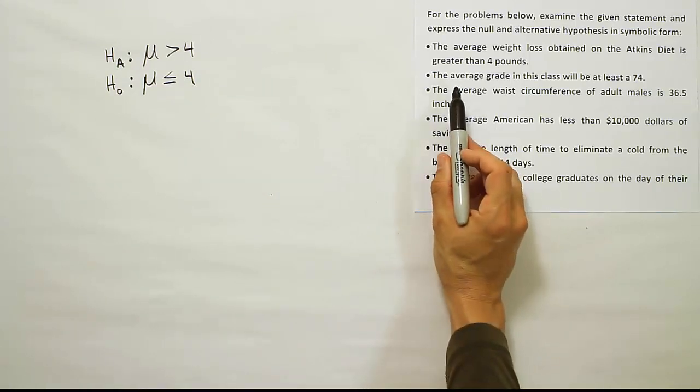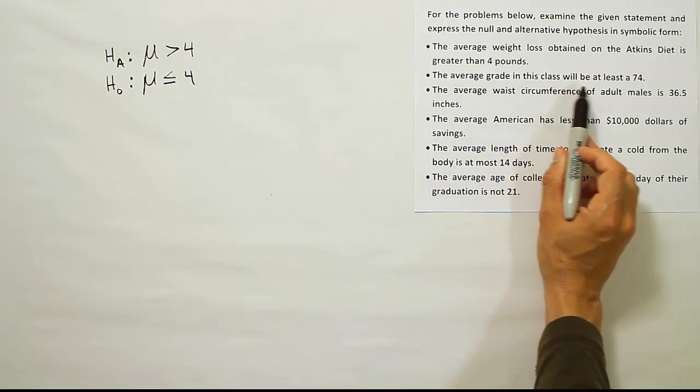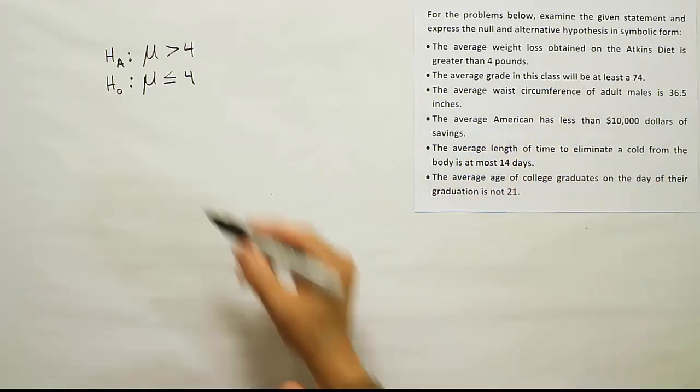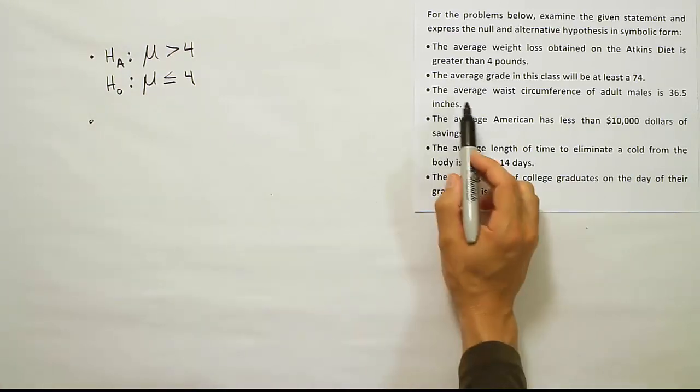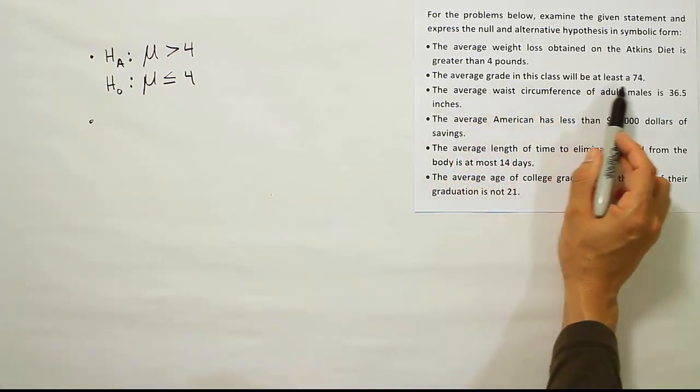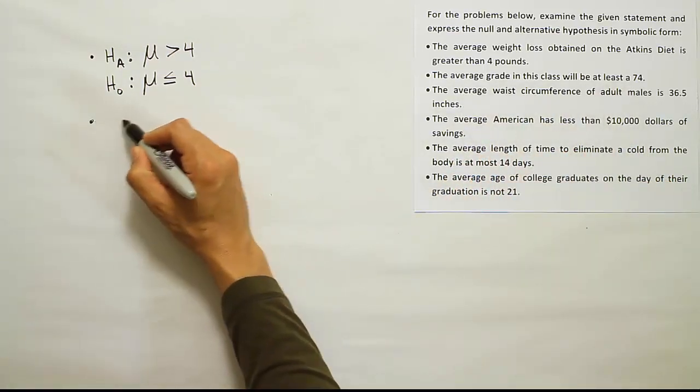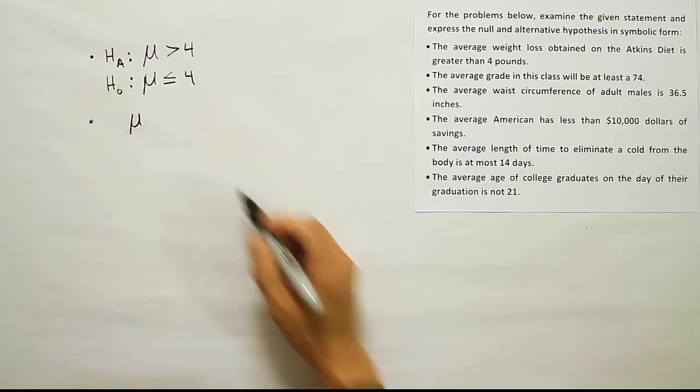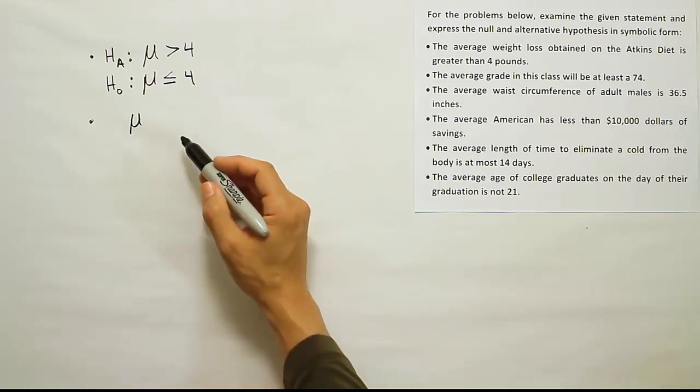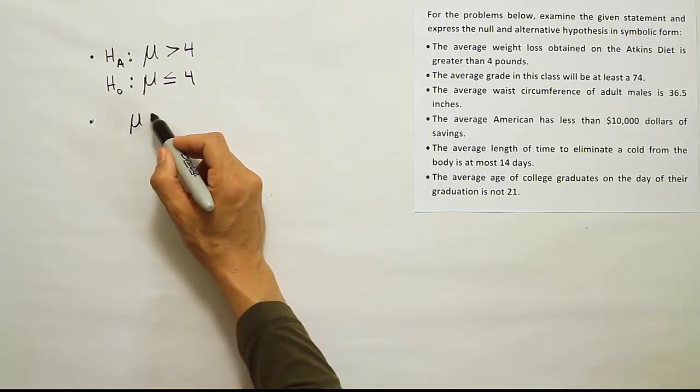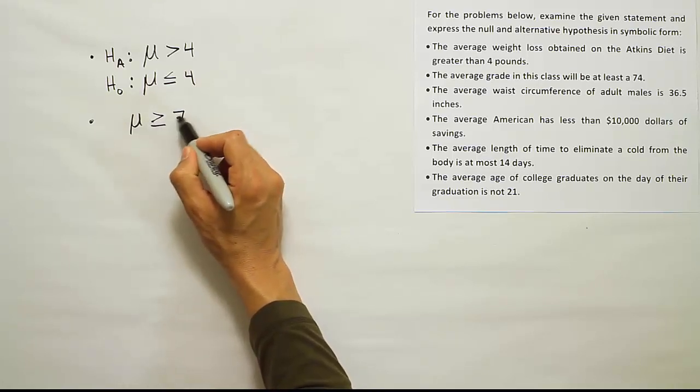Let's look at the next one. It says the average grade in this class will be at least 74. So we know it's about the average. To say it's at least 74 means that it will be that or higher - at least means a minimum. So it'll be 74 or higher, which means the mean will be greater than or equal to 74.